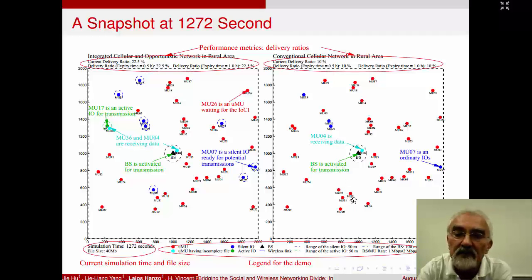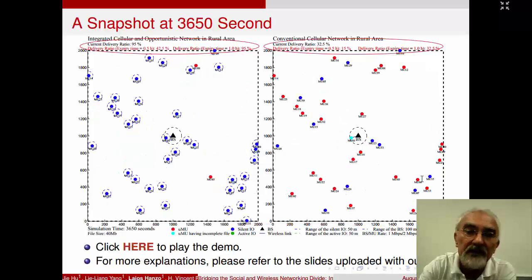And ultimately, it's very clear that as we move forward to the next slide, this is a snapshot of the simulation at 3650 seconds. So in other words, it's roughly an hour. And you would observe here that the majority of the mobile stations have got the desired content, whereas in the conventional cellular network, only a limited fraction, namely 32.5% of the mobiles received the information. In the integrated mobile social networking aided scenario, 95% of them downloaded it.